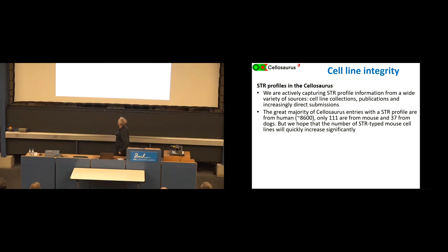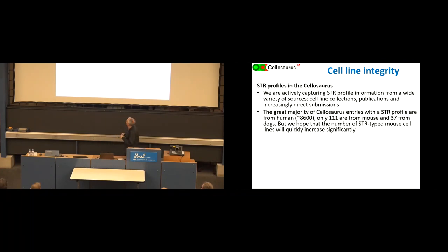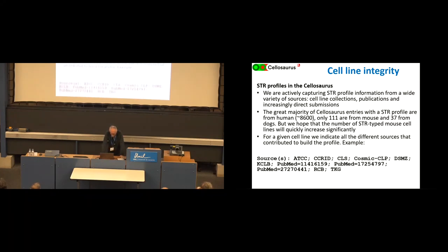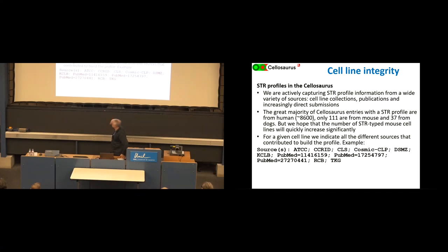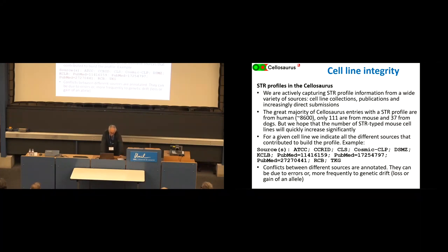Out of 150,000 entries, we have about 1,800 STR profiles - you might say that's only a small number, but this is really prevalent for cancer cell lines, and Cellosaurus has many other cell lines where contamination is less prevalent. We see this number increasing. We tell people: if you authenticate your cell line and you think you should do it, don't hesitate to send us those profiles to integrate into Cellosaurus. We record all different sources of where profiles come from, noting conflicts if different sources give different results, which can be due to errors or to genetic drift - loss or gain of an allele.